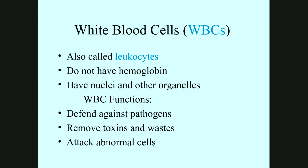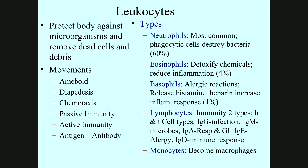The white cells, also called leukocytes, do not have hemoglobin. They have nuclei and other organelles. Their functions include defense against pathogens, removing toxins and waste, and attacking abnormal cells. They have five types: neutrophils, eosinophils, basophils, lymphocytes, and monocytes. They move either by antigen-antibody cross-reactions, chemotaxis, amoeboid movement, or diapedesis movement.